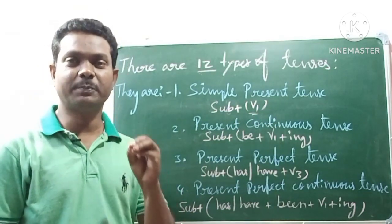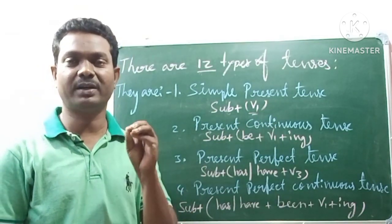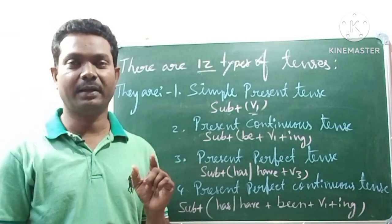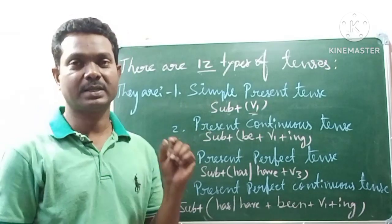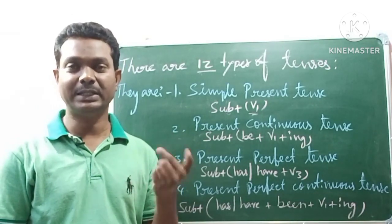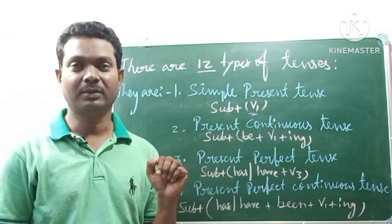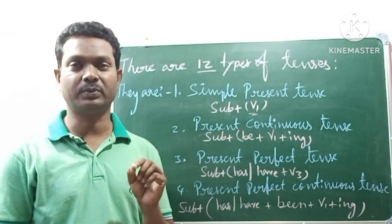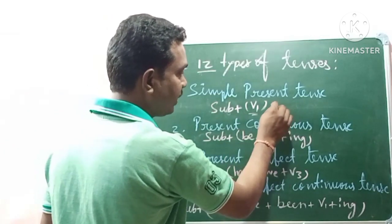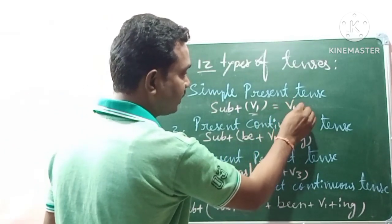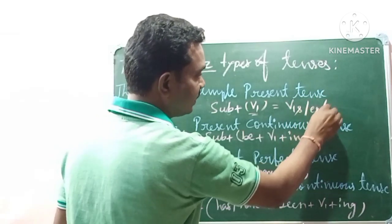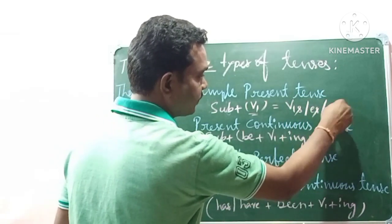For simple present tense, after the subject we write V1. That is called simple present tense. There is a rule for this tense: simple present tense is used for regular habits, daily routines. For first and second person and plural subjects, we use V1 directly.